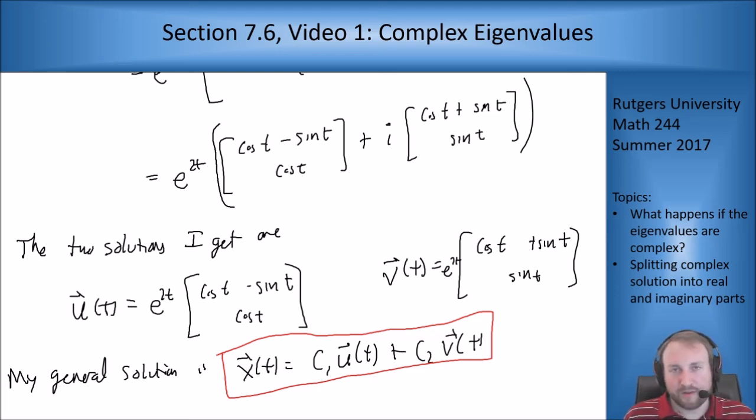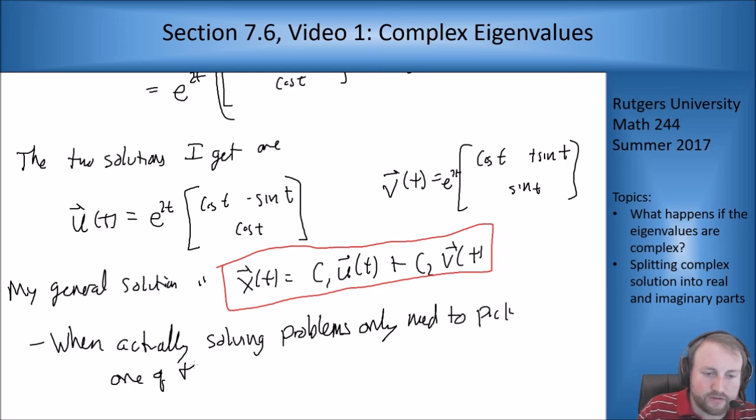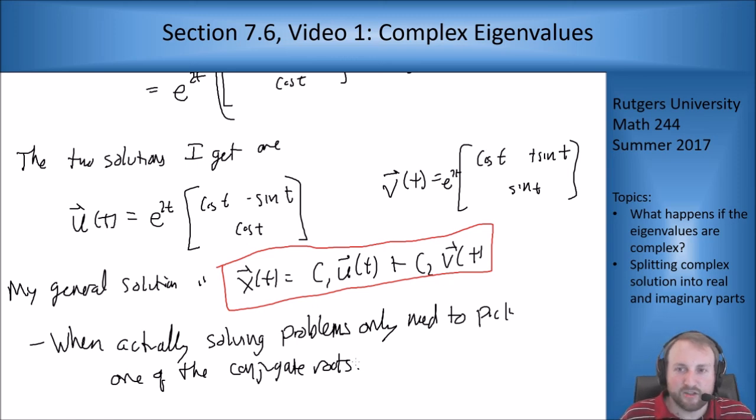You only need to pick one of the roots, probably the plus one's the easier one to do, because you get the same u and v from the negative one as well. So when you're actually solving problems, you only need to pick one of the conjugate roots because you get the same u and v out of the other one. Maybe one has a minus sign, but it doesn't help, it doesn't change anything.